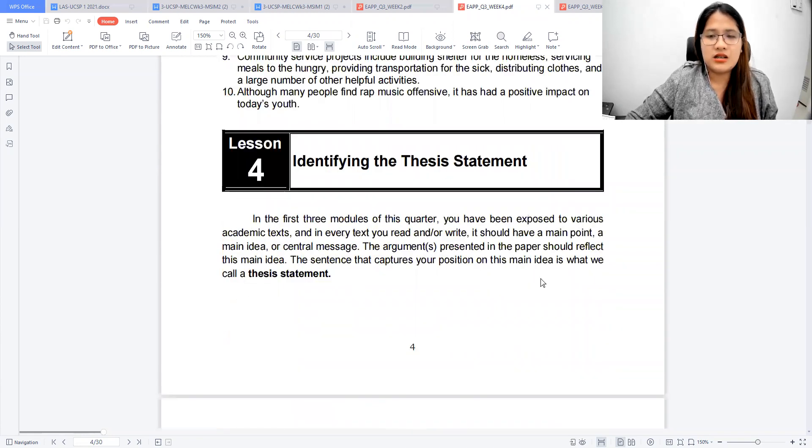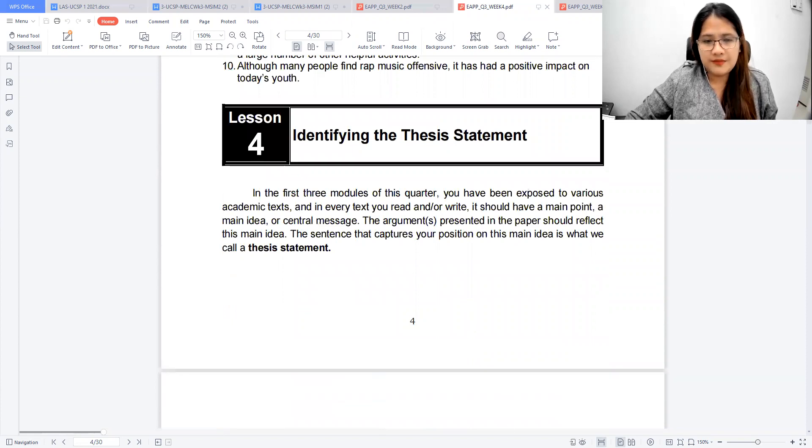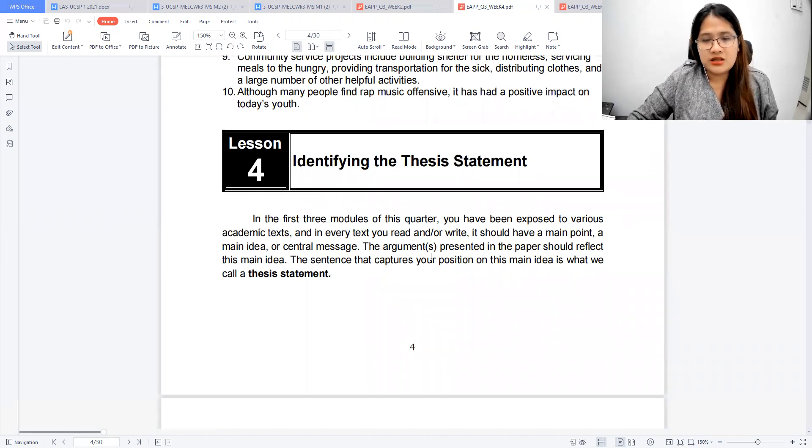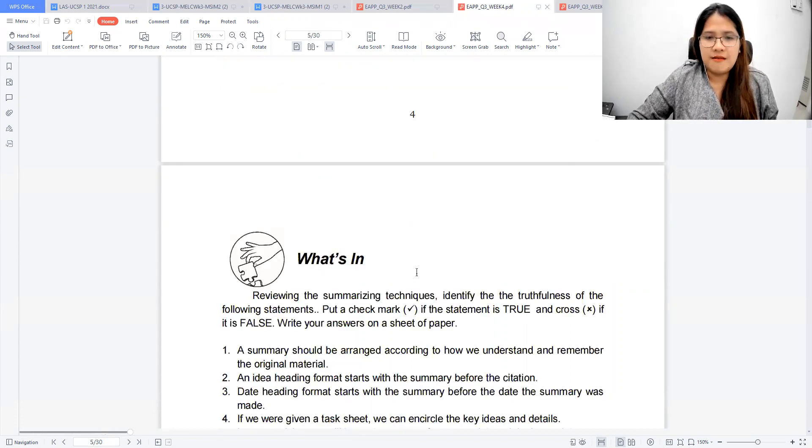So let's look at this first, identifying the thesis statement. So at some point when you read a text, you will usually hear or at some point determine or identify some sort of a voice from the author that presents an argument. So if you're exposed to various academic texts, you would see that they're presenting a message, a point, an argument, or an idea. So the argument presented should reflect the main idea of the entire text, and the sentence that captures the position on this main idea is what we call the thesis statement.